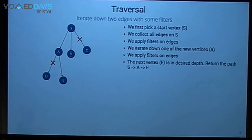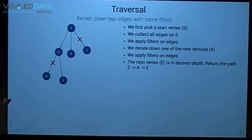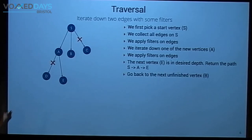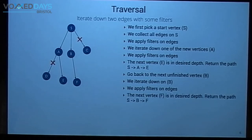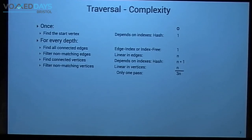I return S to A to E, then backtrack: standing at E, go back to A — no unprocessed edges — go back to S, which still has edge to B. Go to B, ask for all its edges — one found, the filter matches — next result: path S, B, F. Go back to S, which has no other edges. Traversal complete.